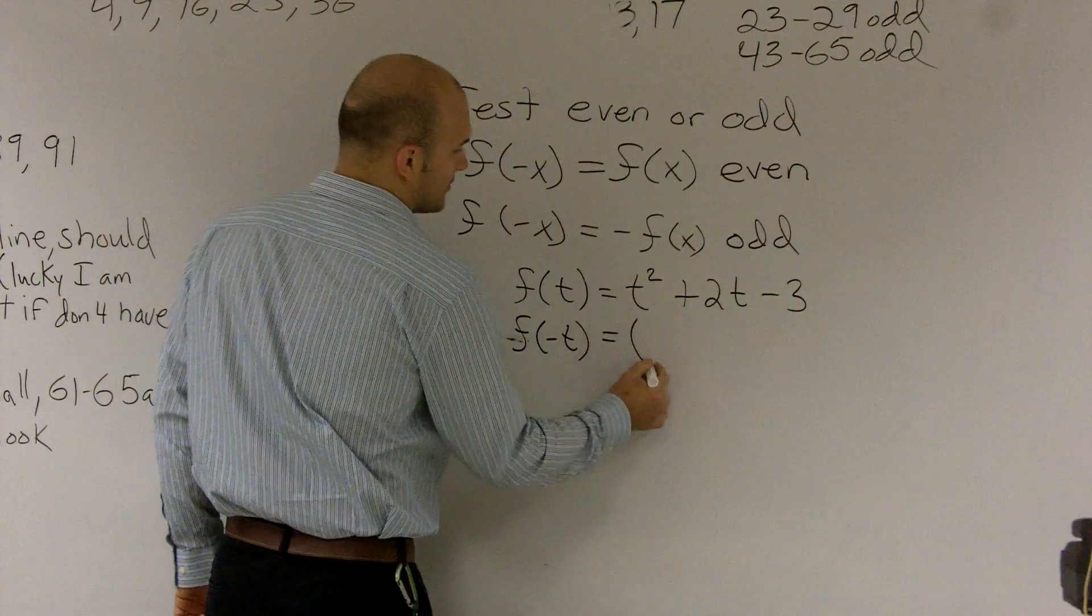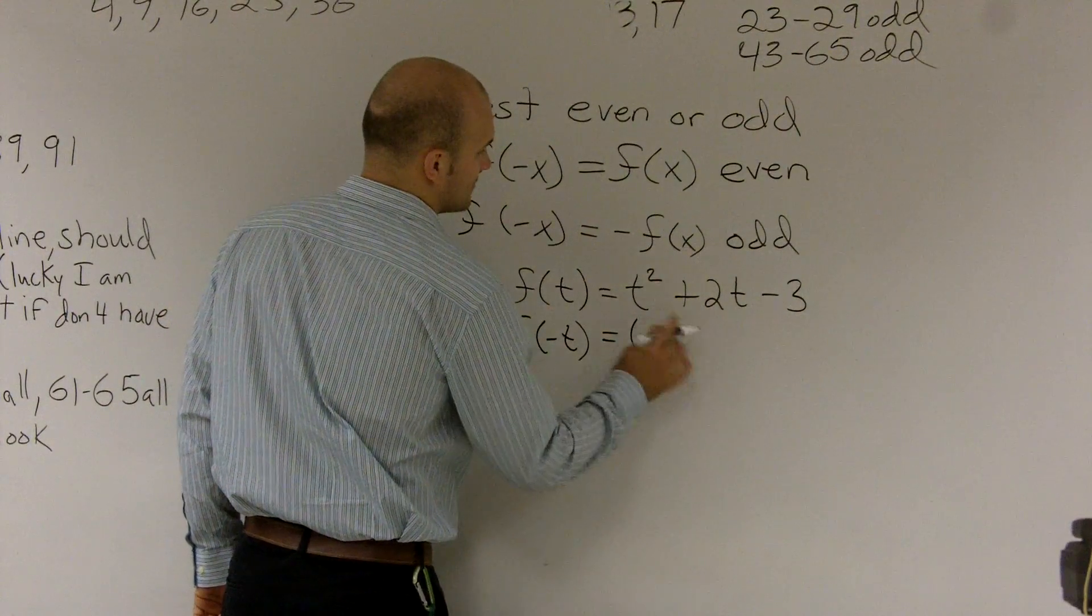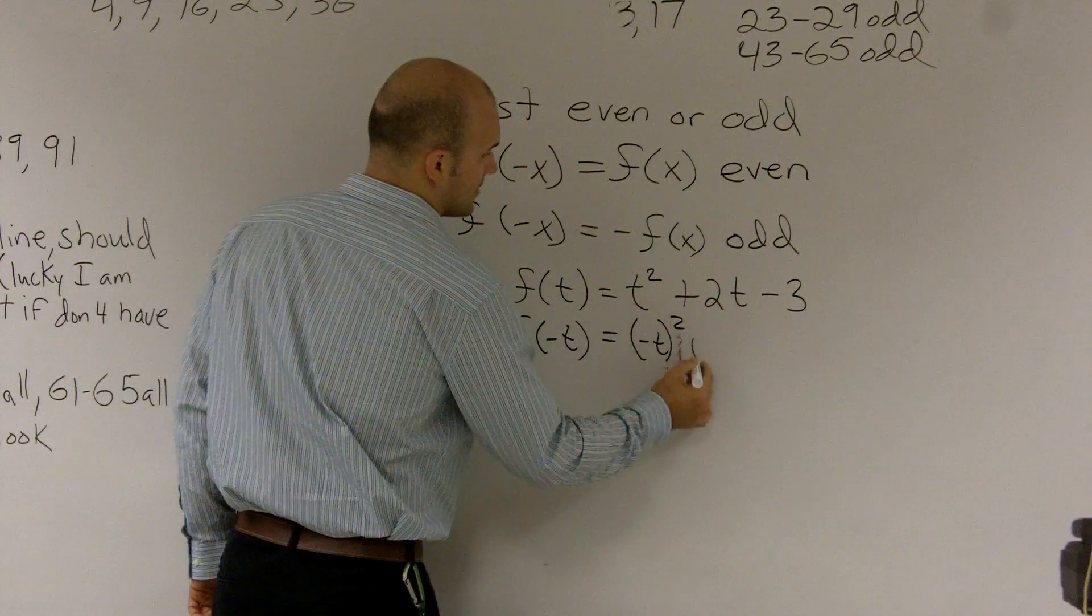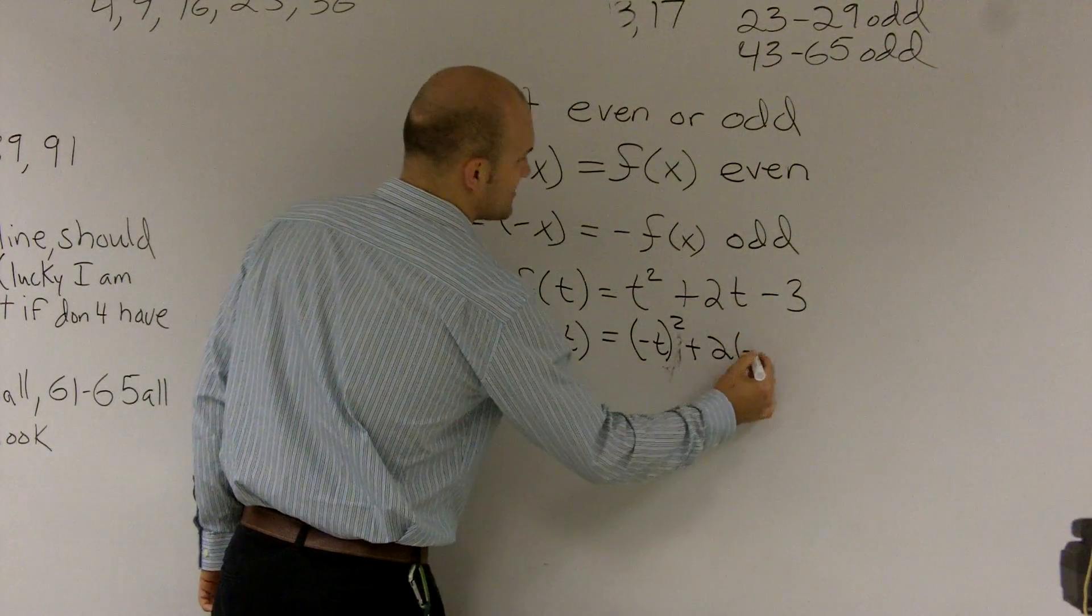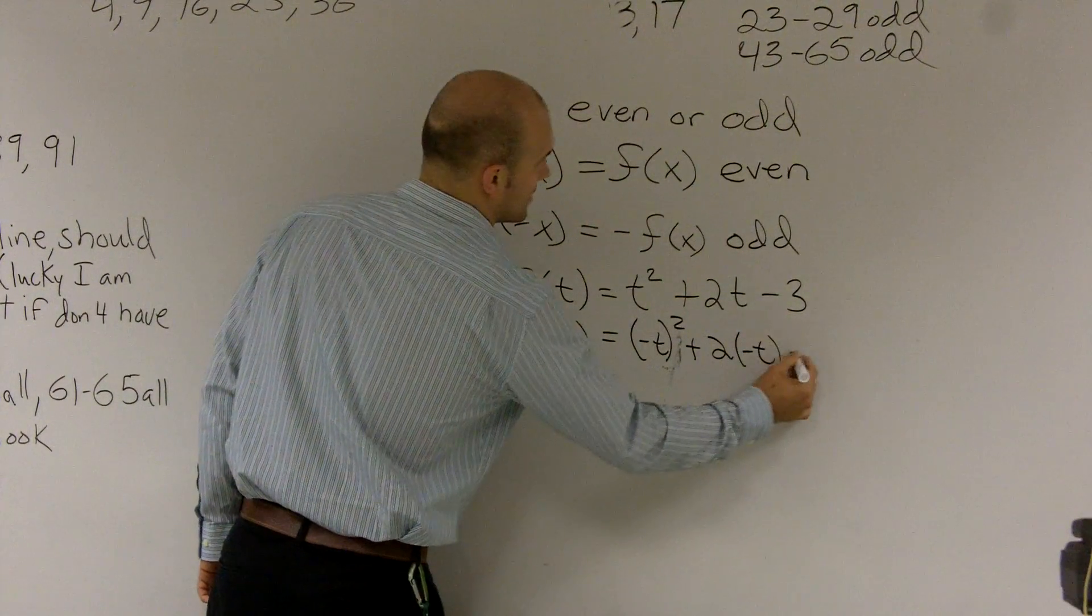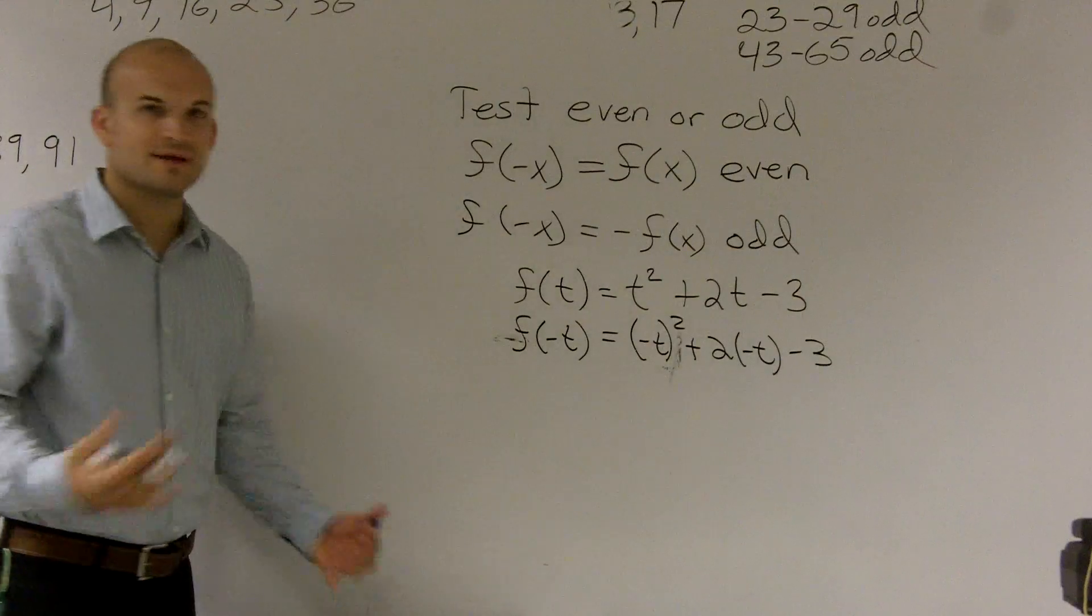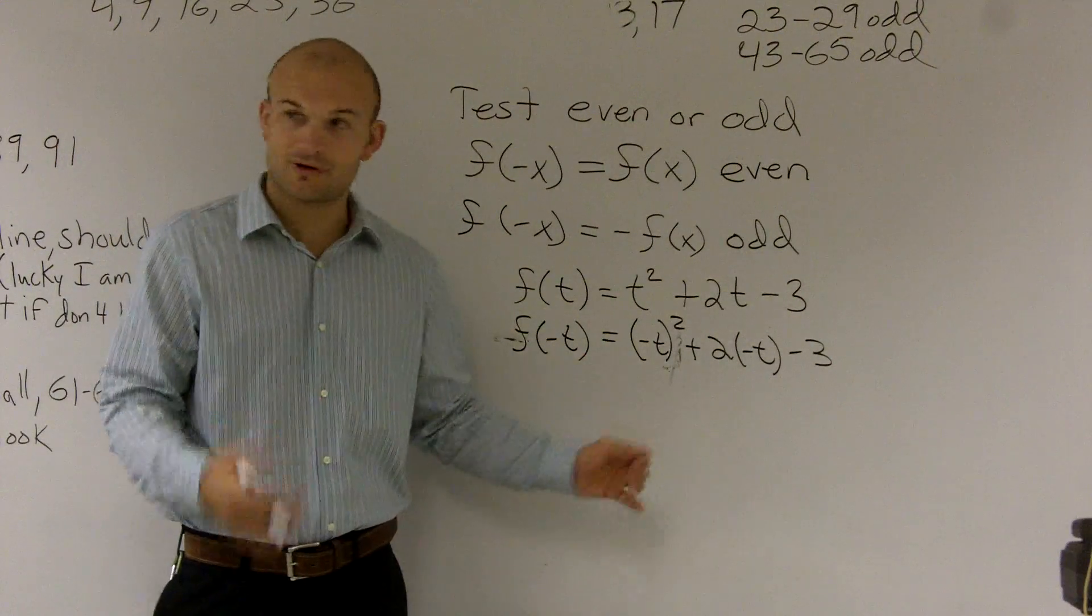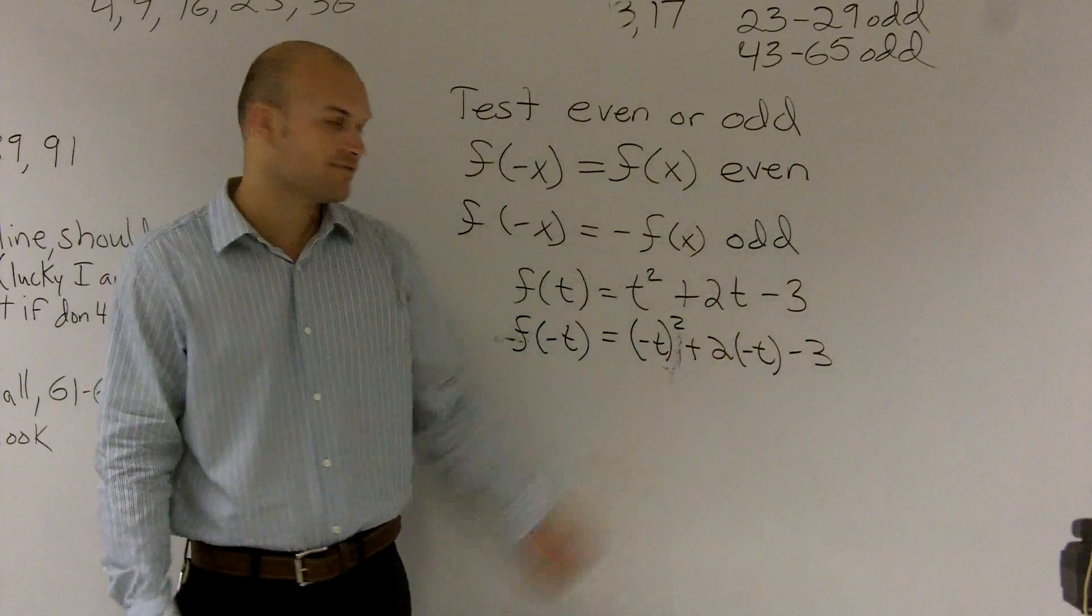So therefore, we have negative t squared plus 2 times negative t minus 3. And I like to put them around parentheses just to remind myself and remind my teacher or whoever I'm doing work for that I'm plugging in that value in for those variables.